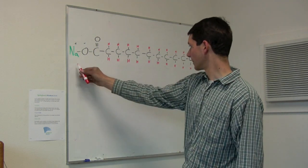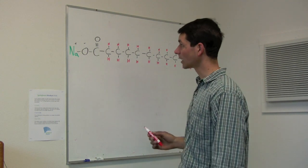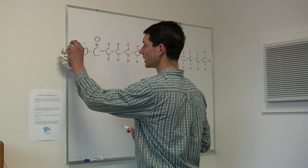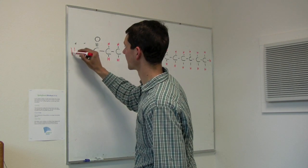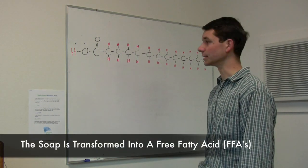The permissible limits for this are about 60 parts per million. When an ion exchange resin gets involved, it exchanges this sodium ion for a hydrogen ion. So now this molecule becomes a free fatty acid.